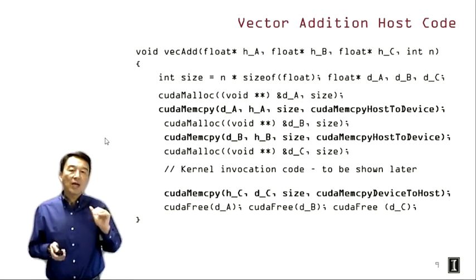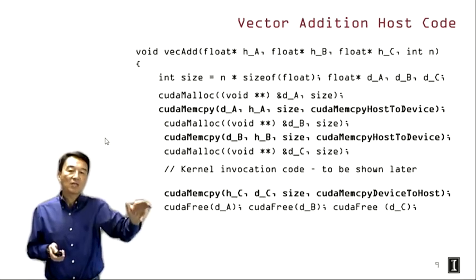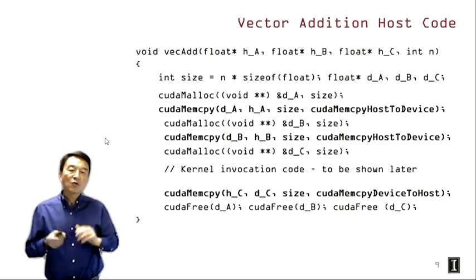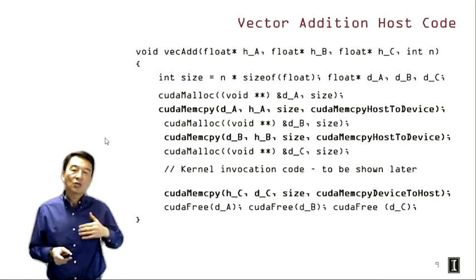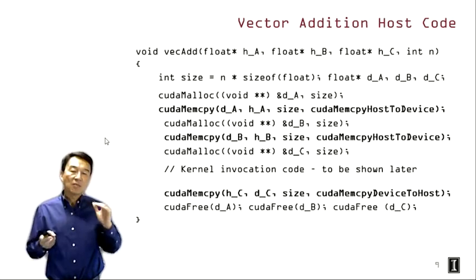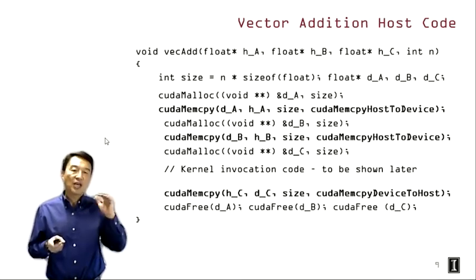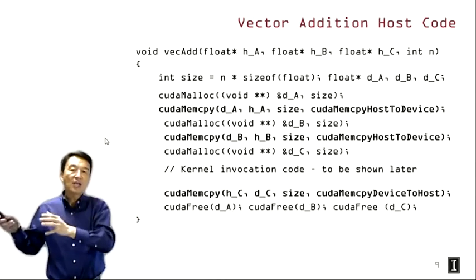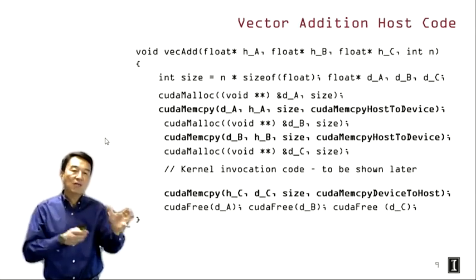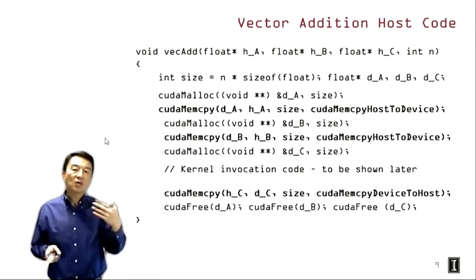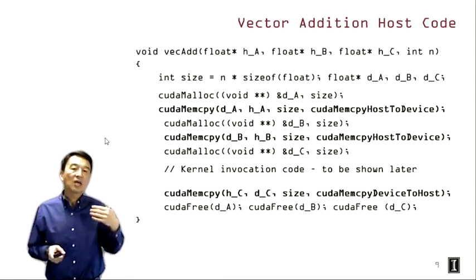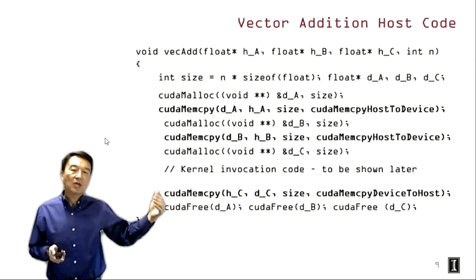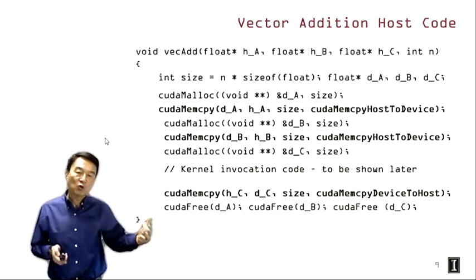In general, for real performance we cannot afford to copy data back and forth before and after each kernel invocation. For real applications, we tend to keep bulk data residing in device memory and keep launching kernels to perform computation on it. Since this is the beginning of the course, we show all the pieces involved so you know how to allocate memory, copy data from host to device, and copy results from device to host. In a real application, some steps may be unnecessary if data already resides in device memory or results can stay there for future use.